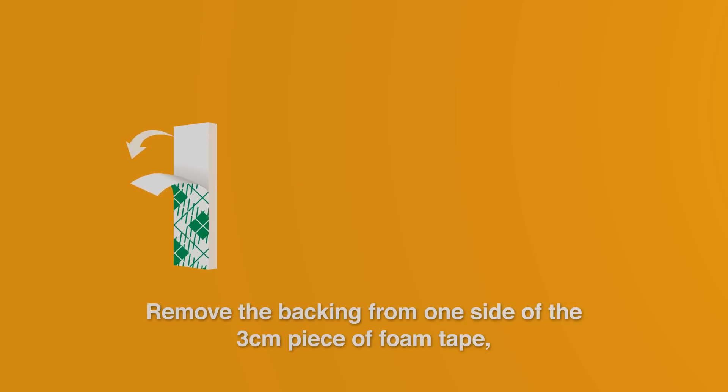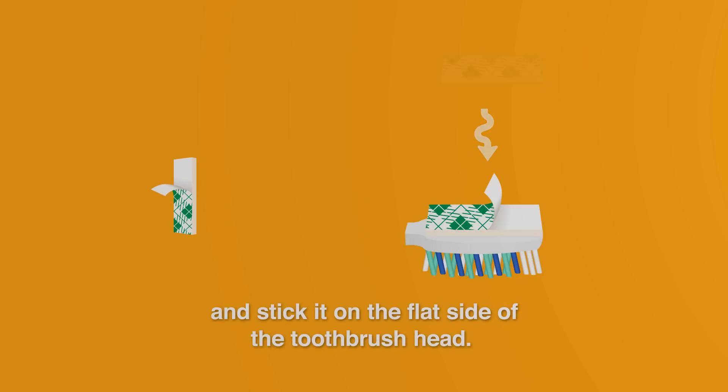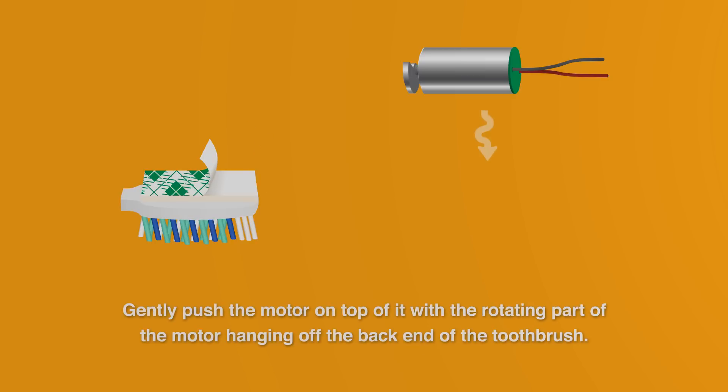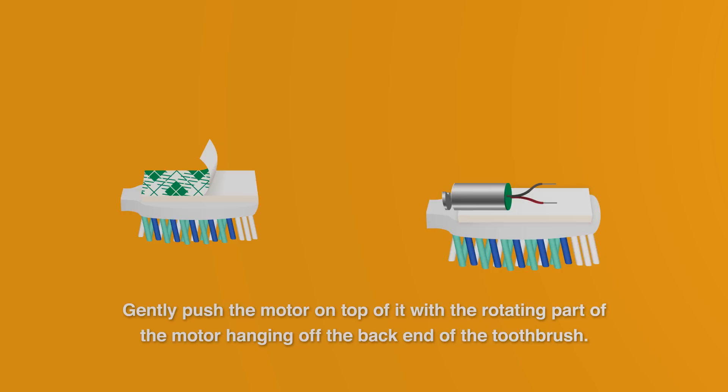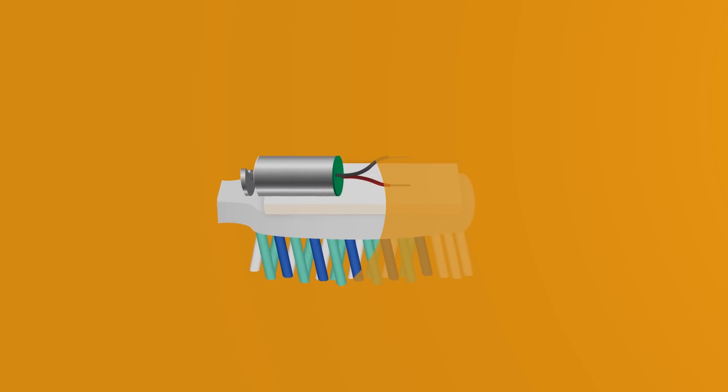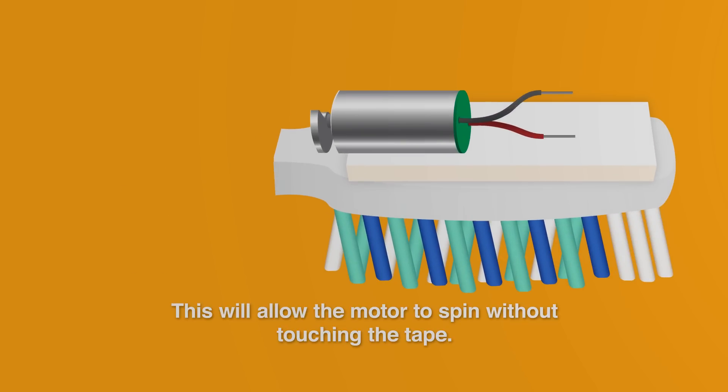Remove the backing from one side of the 3cm piece of foam tape and stick it on the flat side of the toothbrush head. Now remove the backing from the other side of the tape and gently push the motor on top of it, with the rotating part of the motor hanging off the back end of the toothbrush. This will allow the motor to spin without touching the tape.